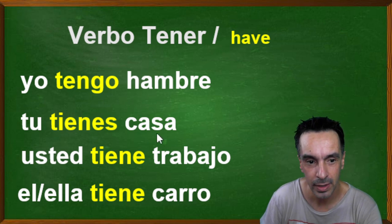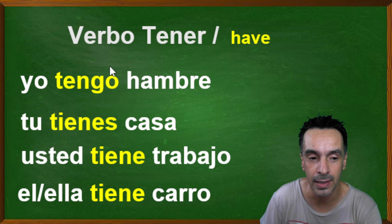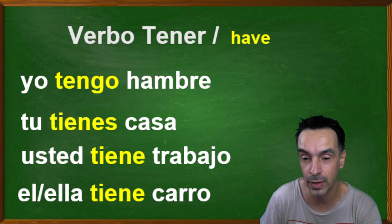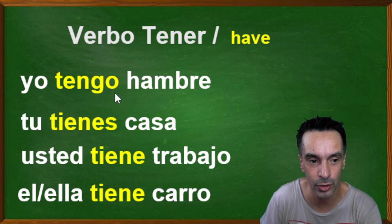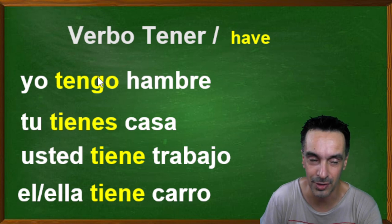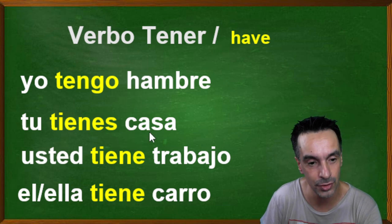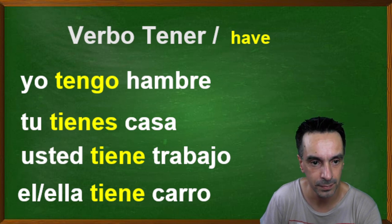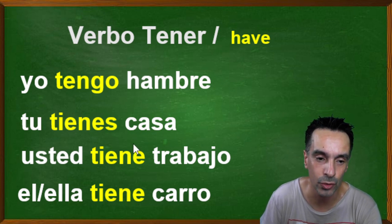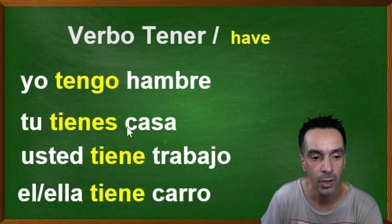Remember, when you have a feeling — in this case 'I'm hungry' — we don't say 'yo estoy hambre.' We don't use the verb 'to be,' we use the verb 'have.' So we say yo tengo hambre — I have hungry. Tú tienes casa — you have house. Usted tiene trabajo — you have job. Él/ella tiene carro — he or she has car.